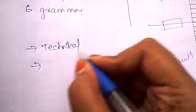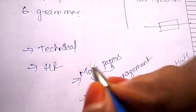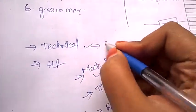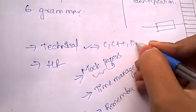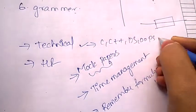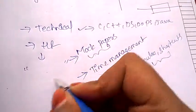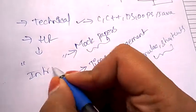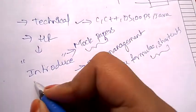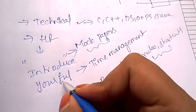The final round is HR. So in technical, the questions will be asked on C, C++, Data Structures, OOPs, and Java basically. And in HR, they'll be asking you common questions like introduce yourself, where do you see yourself after five years. All those common questions will be asked.